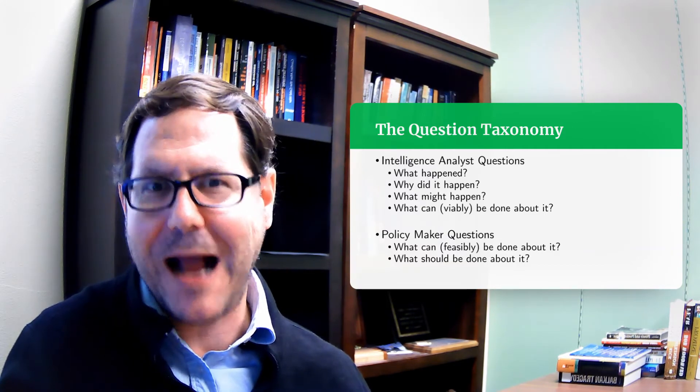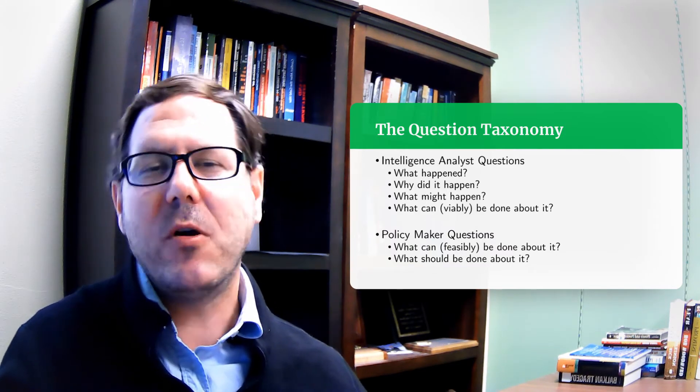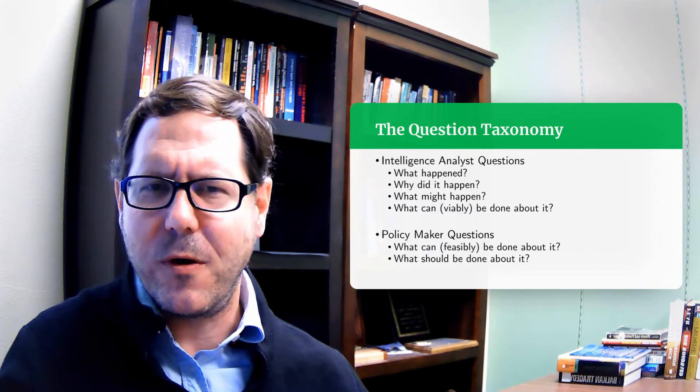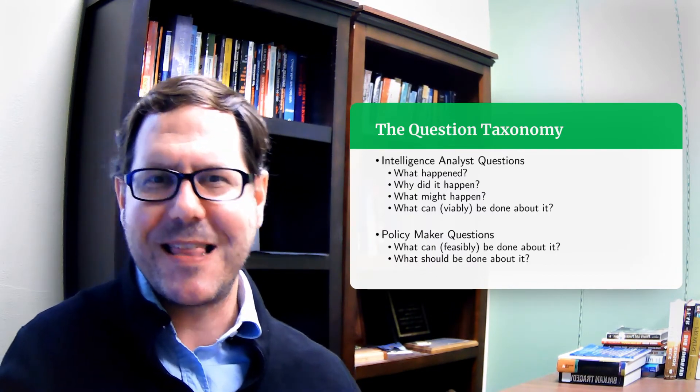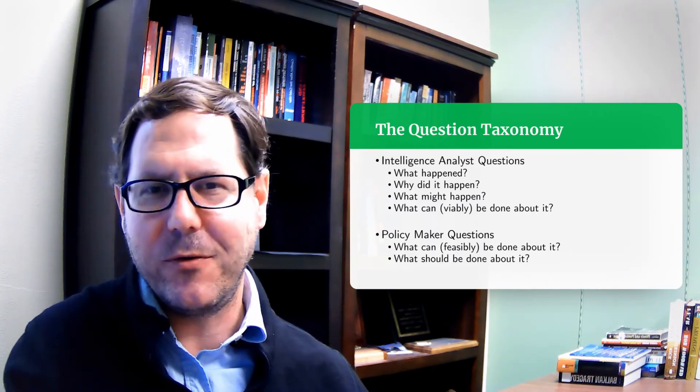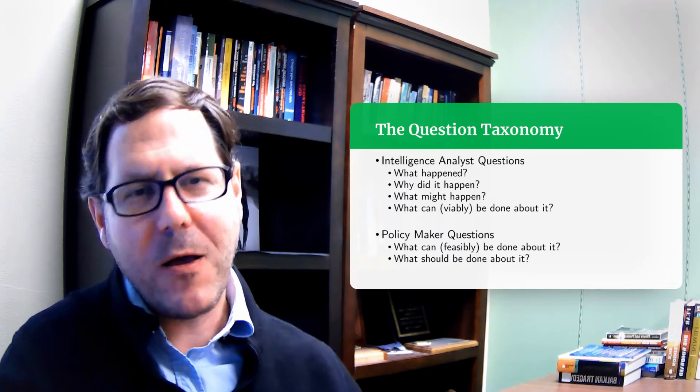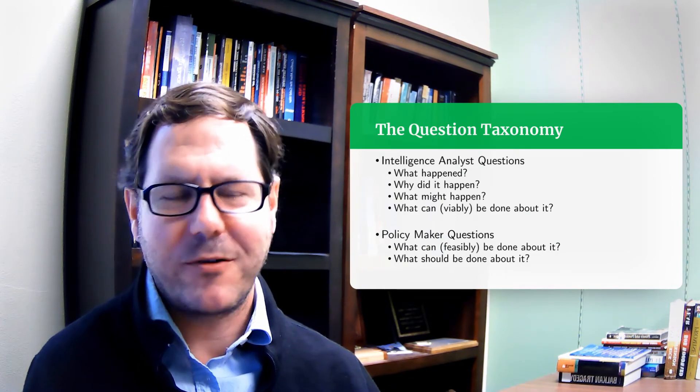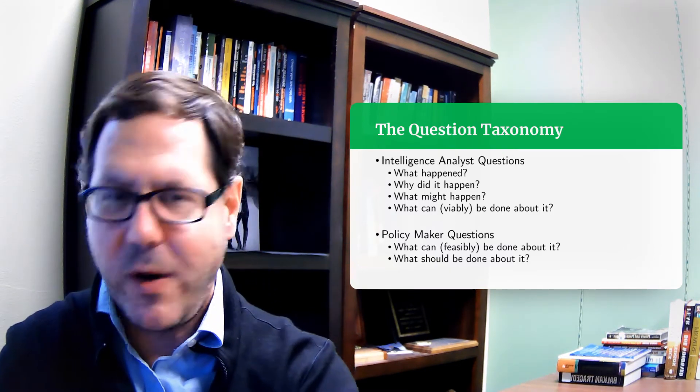But when you're a policy maker and you're thinking about that same question about what can be done, sure you want to select policy options that are actually doable, so in terms of the physics work and you can actually get people where they need to go in a timely manner. But you're also thinking about the feasibility of things. Do I have the votes in Congress for this? How does this interface with existing law? What are the ethical implications of this? Those are policy maker questions about should we be doing this. Is this a thing that can be done? Is this a thing that's actually workable rather than just can we execute this and will it have the effect that we desire? And then policy makers are also going to be wrestling with that moral question about what should be done, balancing all those different ethical and practical and resource considerations that typically we try to separate out from the intelligence analyst part of this equation.